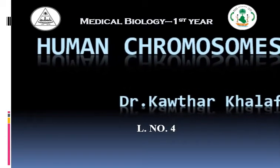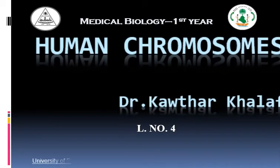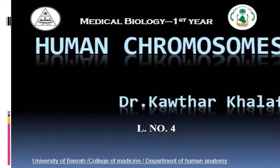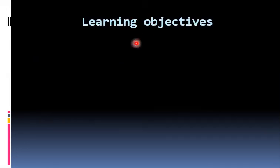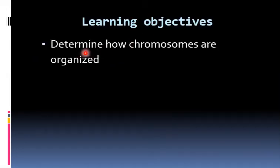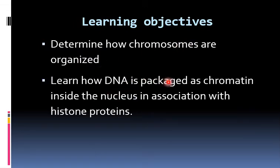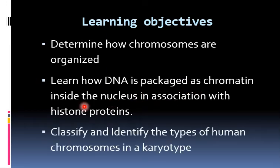Bismillah ar-Rahman ar-Rahim. Assalamu alaykum. This lecture is about normal human chromosomes. The learning objectives are: determine how chromosomes are organized, learn how DNA is packaged as chromatin inside the nucleus in association with histone proteins, and classify and identify the types of human chromosomes in a karyotype.